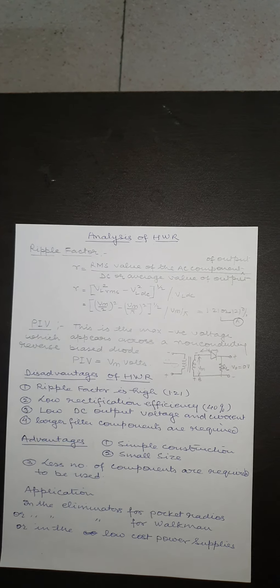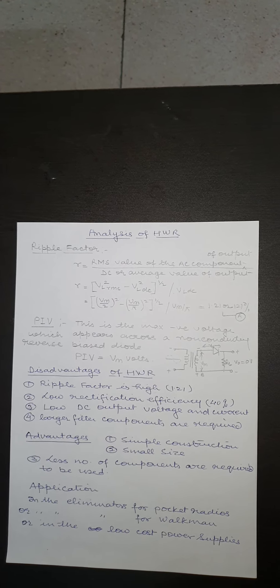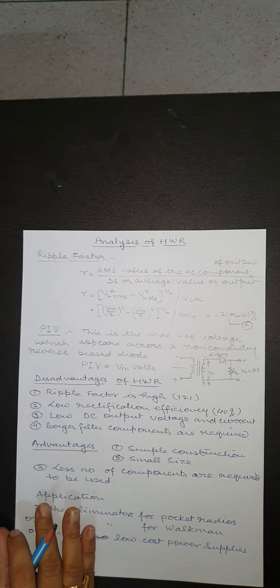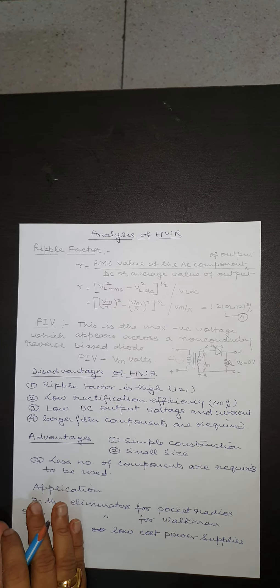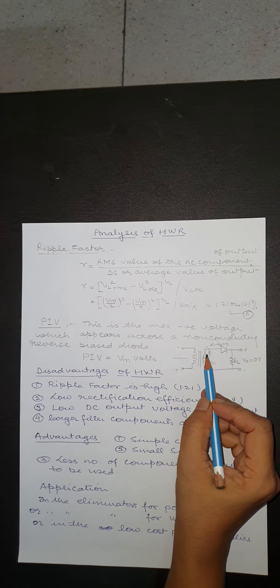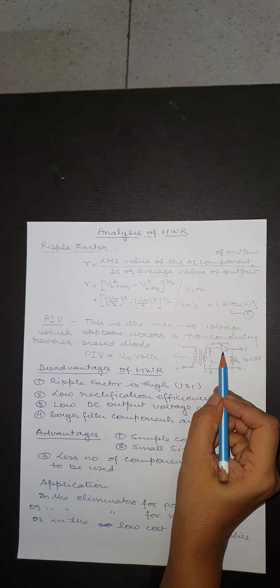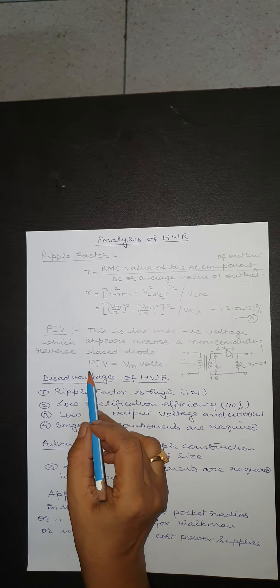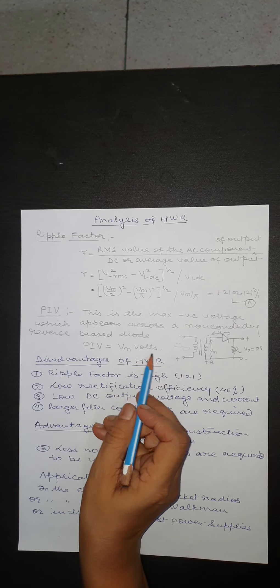Next is peak inverse voltage. Peak inverse voltage is the maximum negative voltage which appears across a non-conducting reverse biased diode. The maximum negative voltage across this diode is -Vm when the diode is not conducting. Hence, peak inverse voltage is Vm.